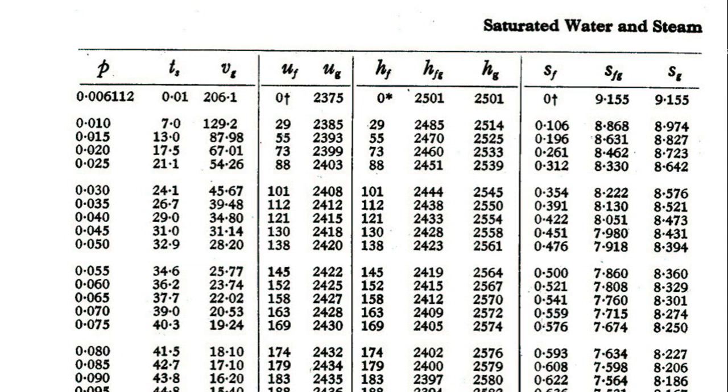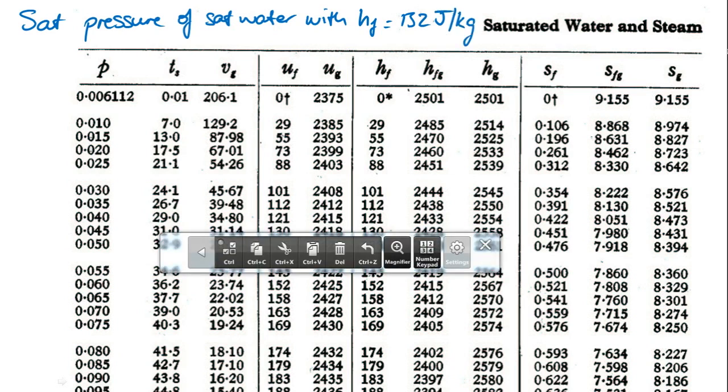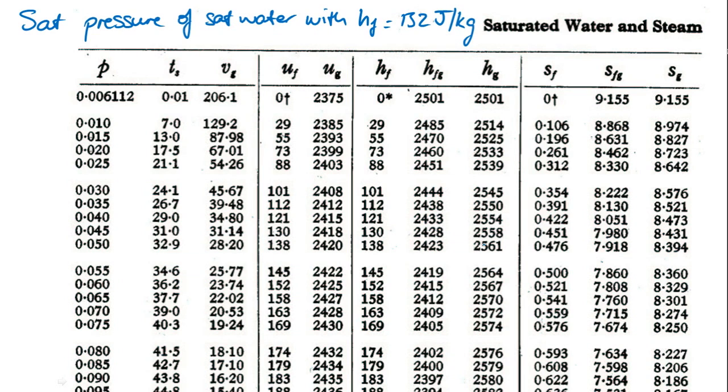We'll do a second example, working back in the other direction. If we are given the enthalpy and we want to work out, for example, what is the saturation pressure, we can also do that. Here we'll try and find the saturation pressure for liquid water where the enthalpy is 132 joules per kilogram.